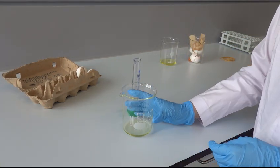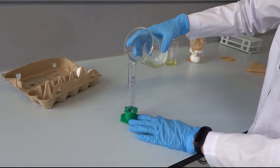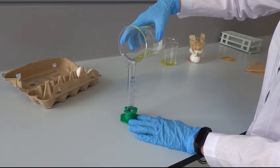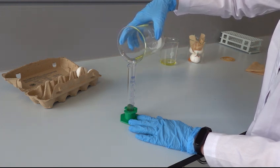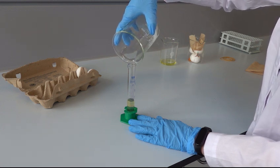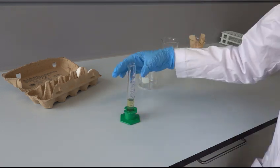In the next step, transfer the filtered egg white into a cylinder and note the total amount of egg white. If the filtered egg white will not be used the same day, close the cylinder with aluminum foil and store it in the fridge until the beginning of the next course. Otherwise, place it on ice.